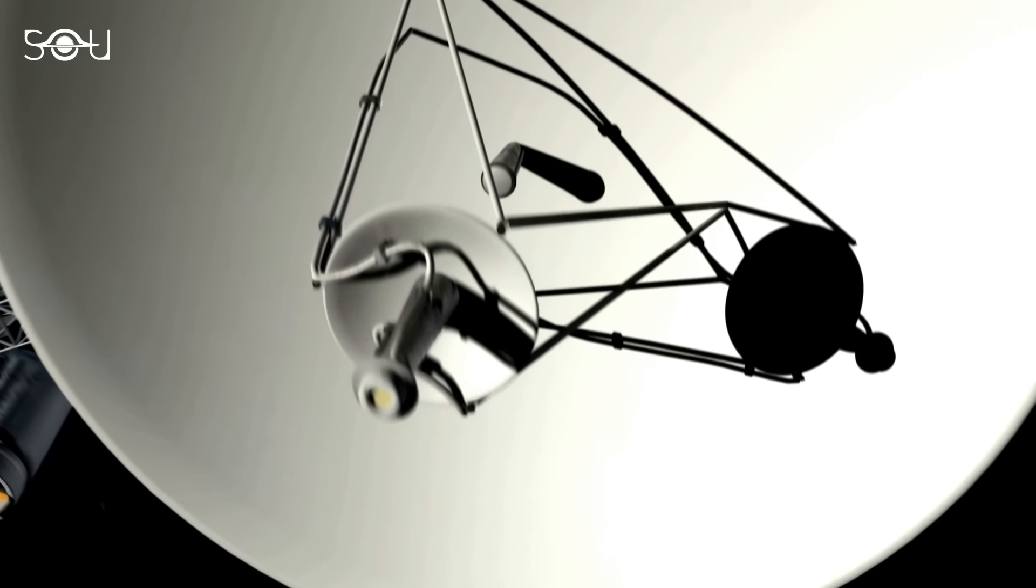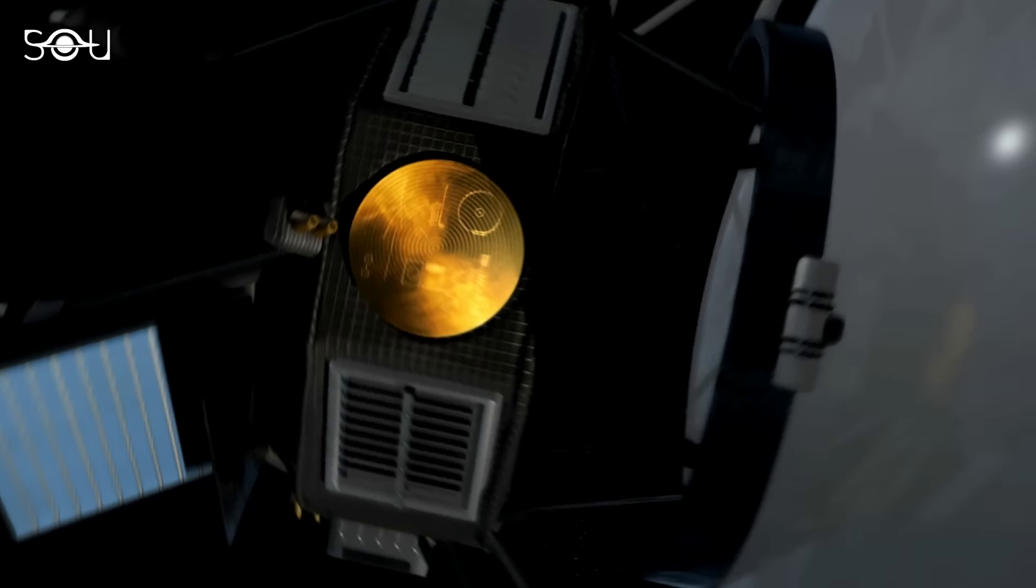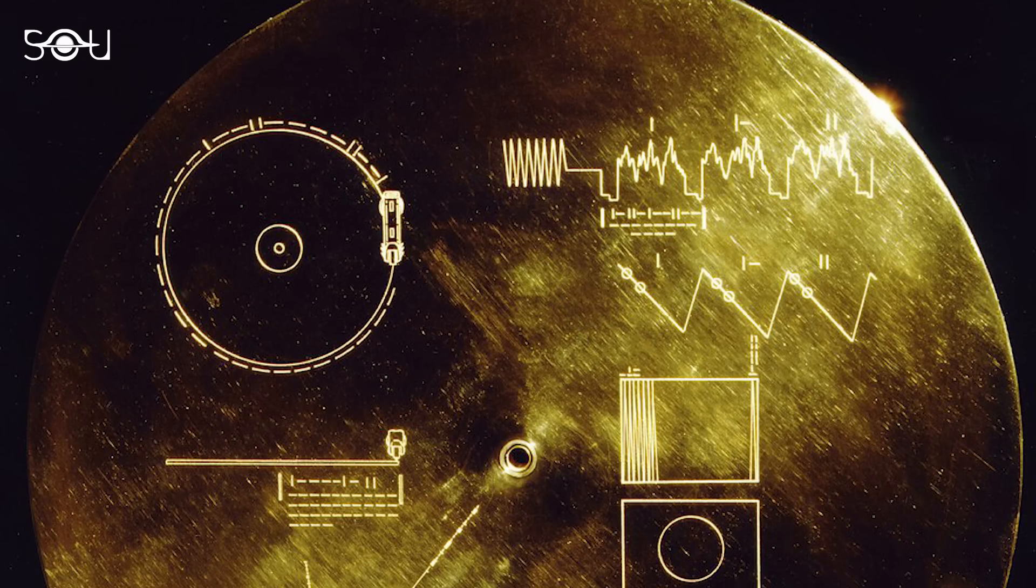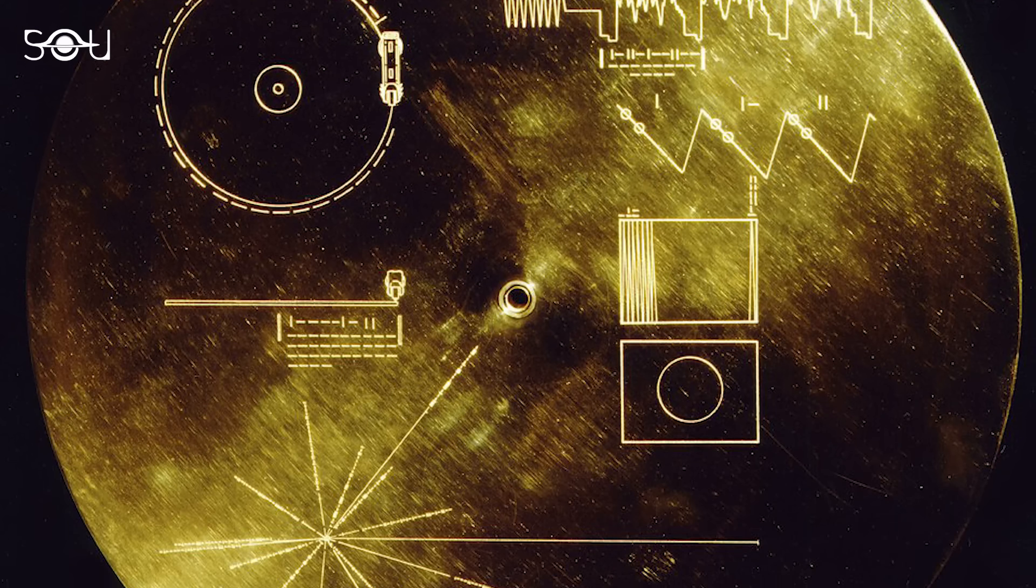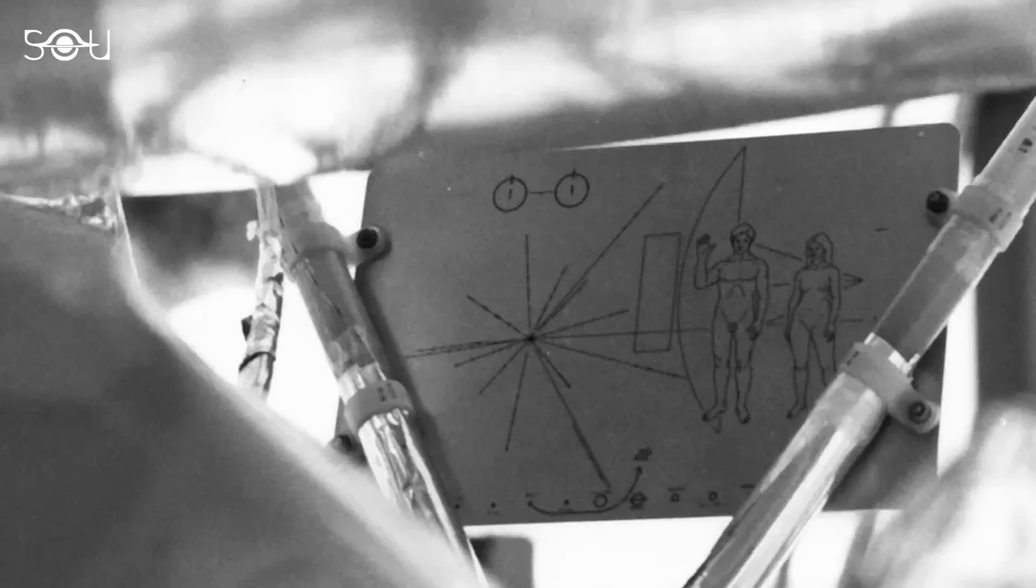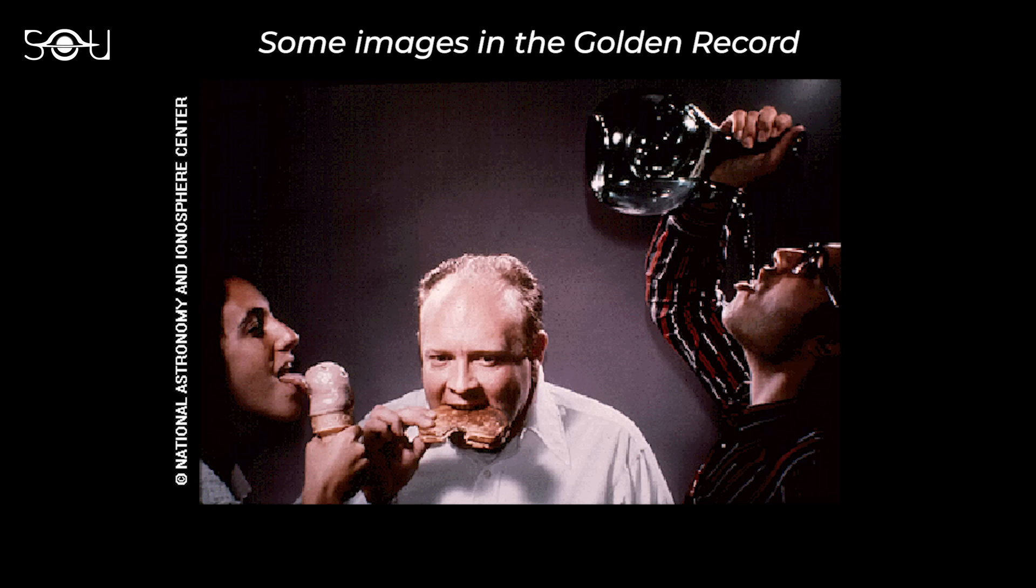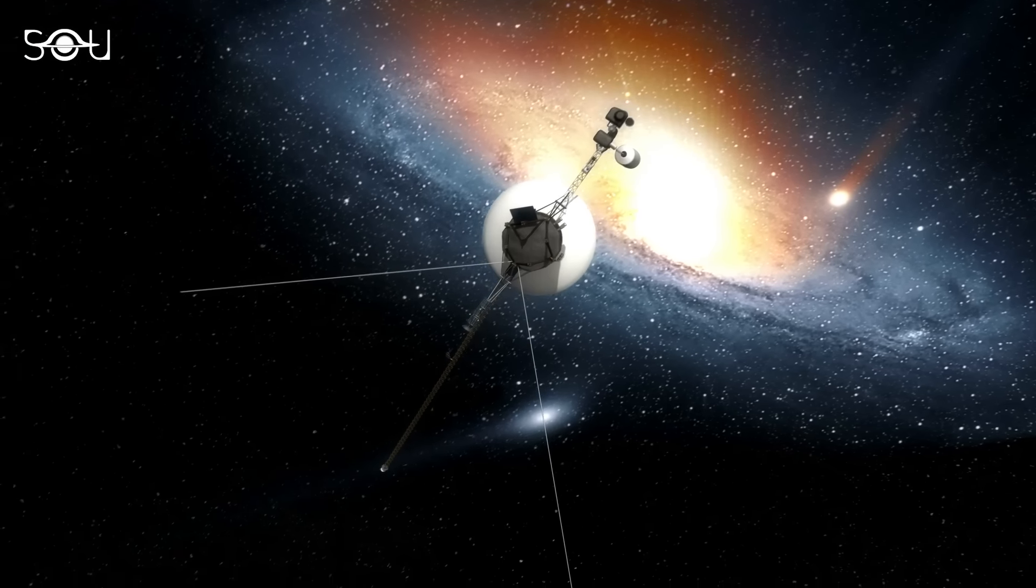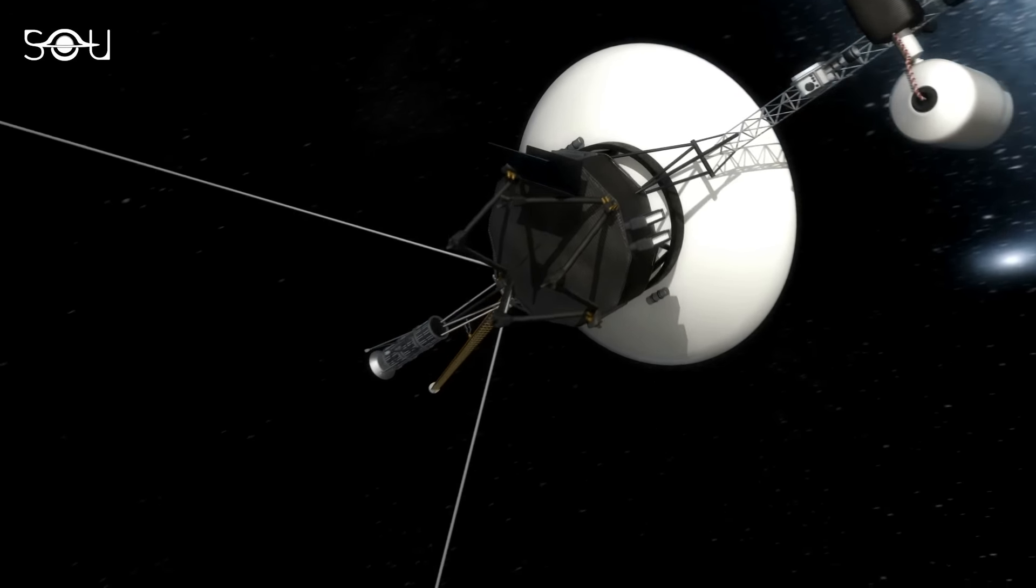One of the most special things about Voyager 1 is the golden record it carries. This record is like a time capsule, filled with sounds and images from Earth, intended to show other life forms, should they ever find it, what life is like on our planet. This record also has instructions on how to play it and a map showing where it came from. The idea was to share a bit of our world with whoever might find it. Even if that happens millions of years from now, it's like a bottle thrown in the cosmic ocean, carrying a message of who we are from a little blue planet far away.